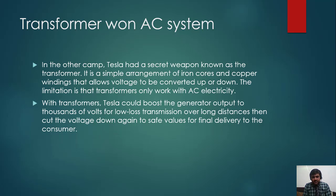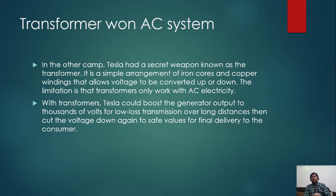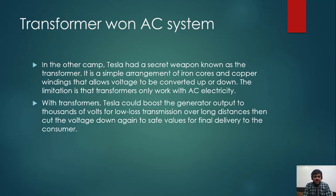A transformer consists of iron cores and copper windings that allow voltage to be converted up or down, but it cannot work on DC. For beginning-level students, think about what will happen if you connect DC to a transformer and why the transformer does not work on DC. Write your answers — it will increase your conceptual understanding.